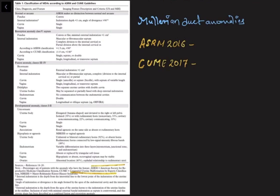A normal or arcuate uterus is where the fundus is convex, internal indentation is less than one centimeter, angle of divergence is more than 90 degrees, and the cervix and vagina are single. Note that ASRM 2016 or any further update including 2021 does not distinguish between normal and arcuate — arcuate is considered a normal variant.